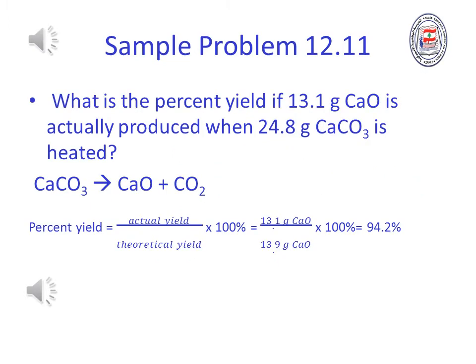Sample problem 12.11: What is the percent yield if 13.20 grams CaO is actually produced when 24.80 grams CaO3 is heated? Use the equation for percent yield. The theoretical yield for this problem was calculated in sample problem 12.10.